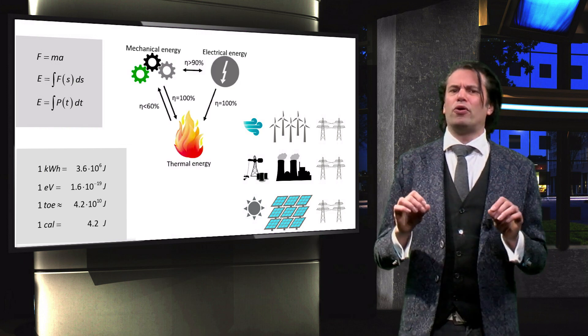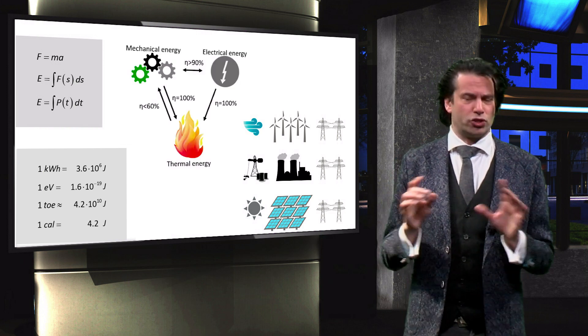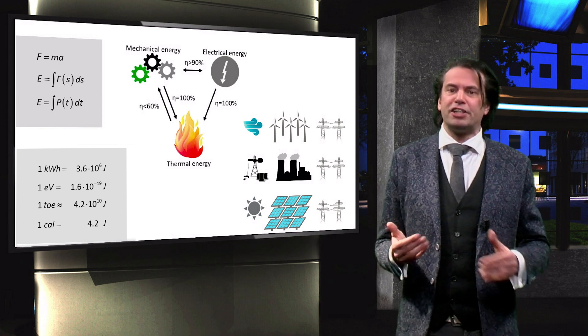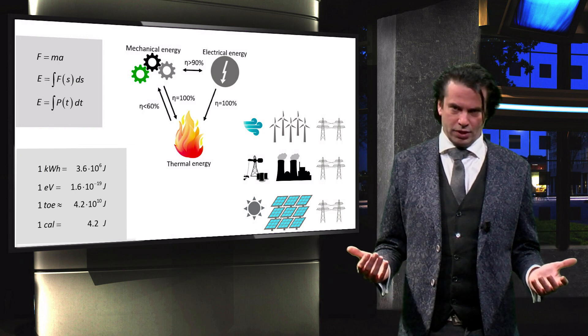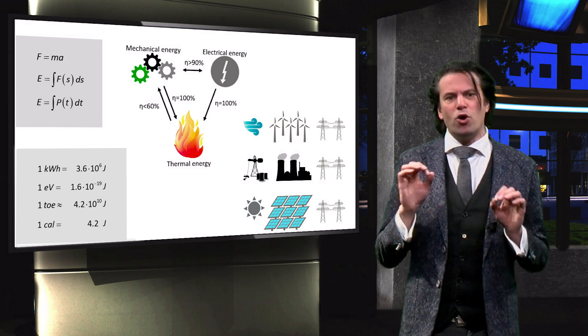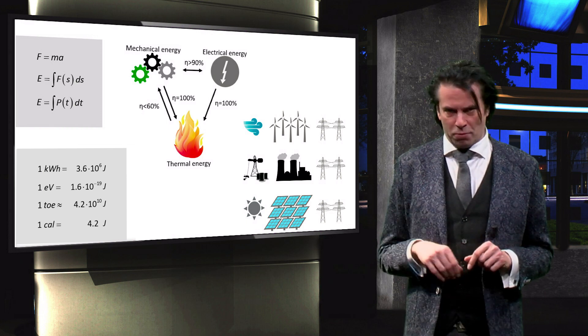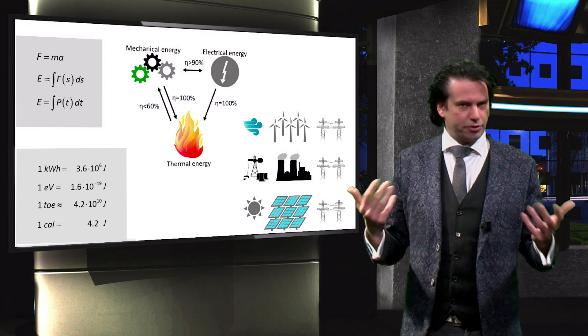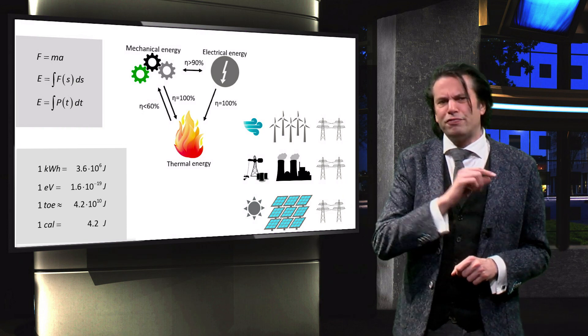Then we found that even though the quantity of energy in a system does not change, the quality of the energy will only ever decrease or stay the same. Thermal energy is the most dispersed and least useful form of energy, and we discussed the thermal energy dissipation in a material.